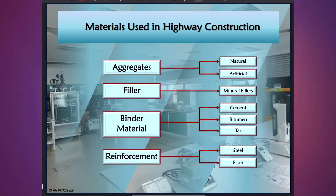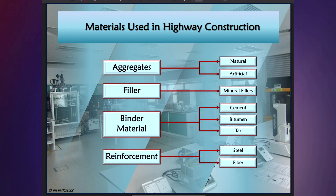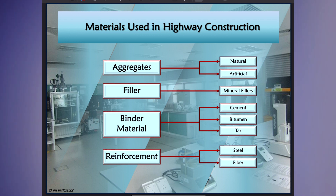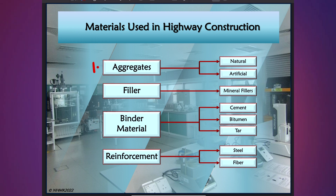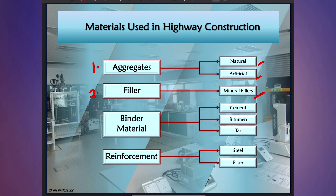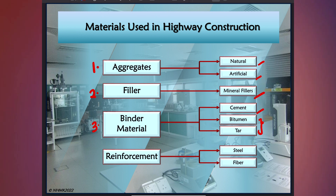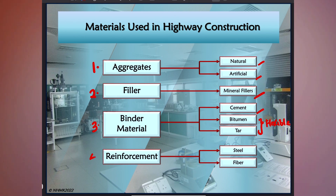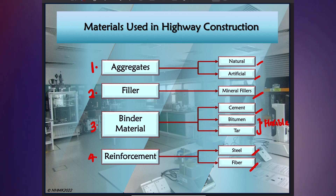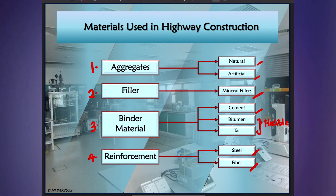Now let us see what are the common materials used in highway construction. First, we have aggregates, which consist of natural and artificial aggregates. Next, we have fillers, which usually consist of mineral fillers. Then we have binder material — cement for rigid pavements and bitumen and tar for flexible pavements. And lastly, for reinforcement, we have steel and fibre, which are commonly used in highway construction.